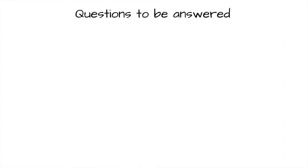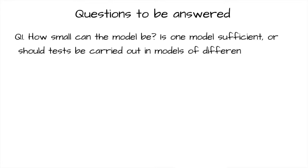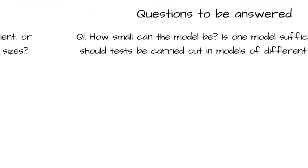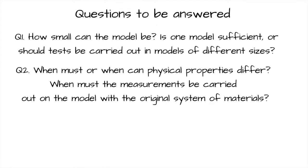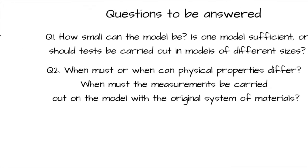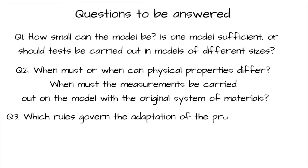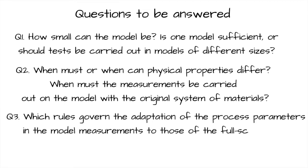Number one: How small can a model be? Is one model sufficient, or should tests be carried out in models of different sizes? Number two: When must or can physical properties differ? When must measurements be carried out on the model with the original system of materials? Number three: Which rules must cover the adaptation of process parameters in model measurements to those of the full-scale plant?